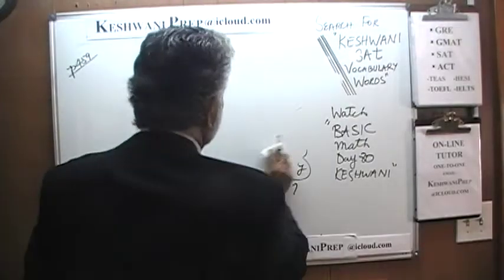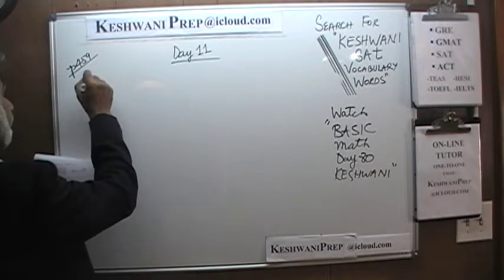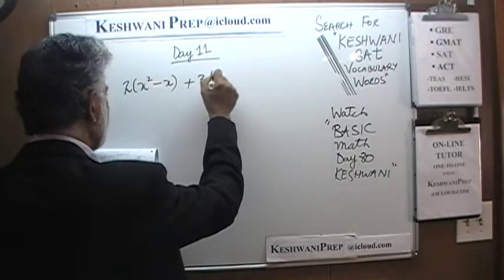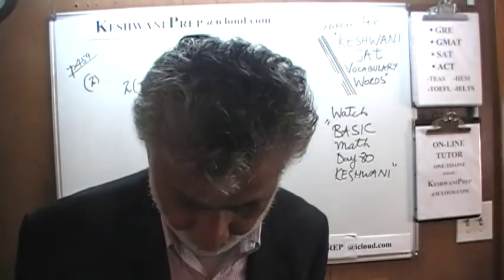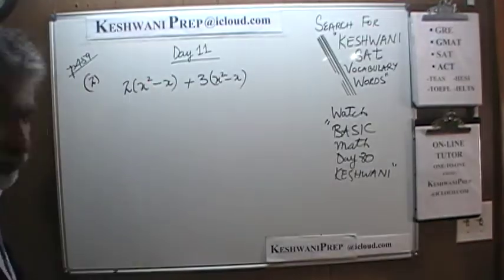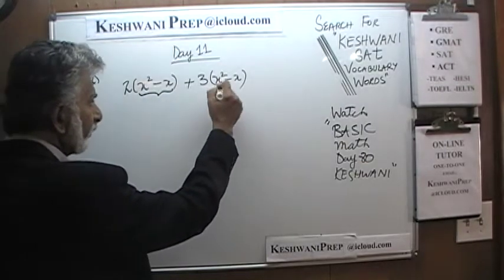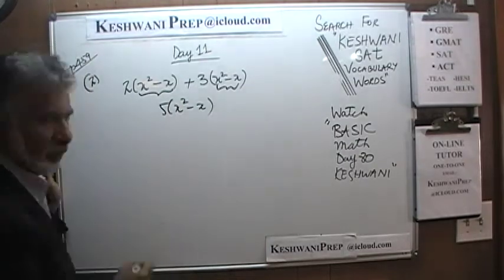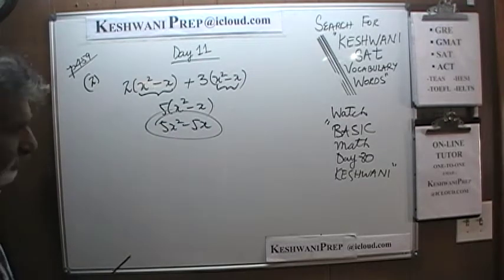Number 2. They simply want us to simplify the expression — identify which of the following is equivalent. We have 2 times the quantity (x² minus x), which is the same quantity as the second term. So we have 2 of those and 3 of those, which means 5 of that quantity. Opening it up: 5x² minus 5x is the final answer. The answer is A.